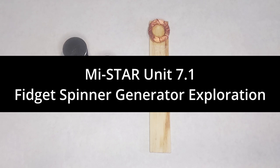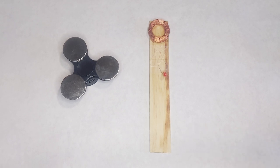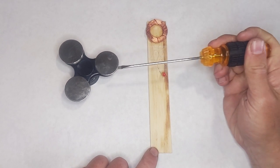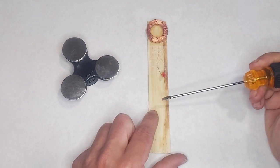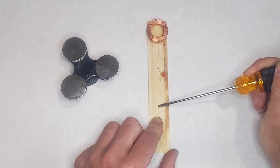This generator looks pretty simple. It has two parts: this base and this fidget spinner. The base is just a piece of wood that's holding everything together.